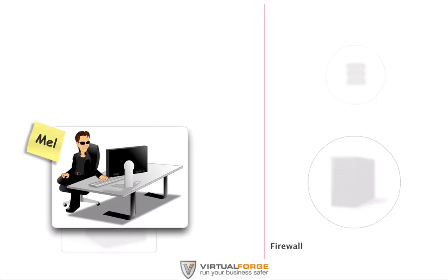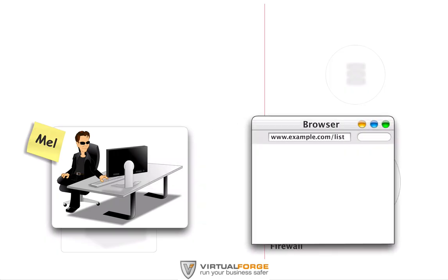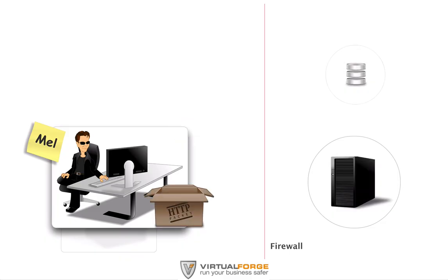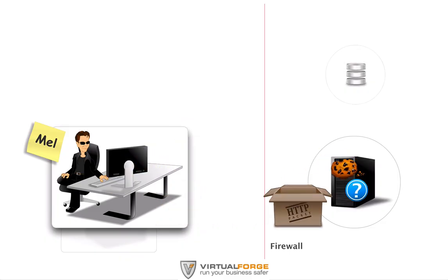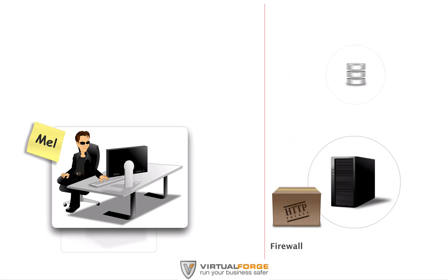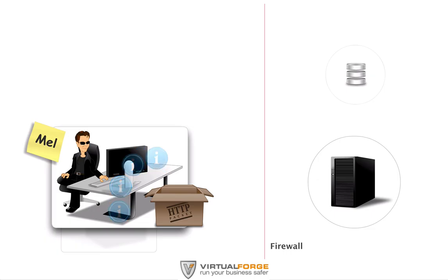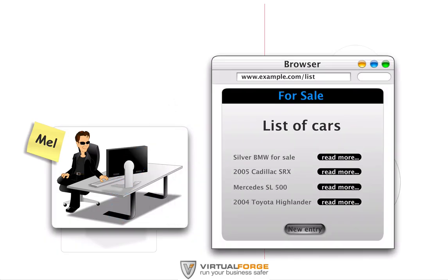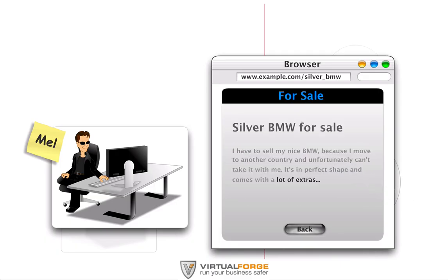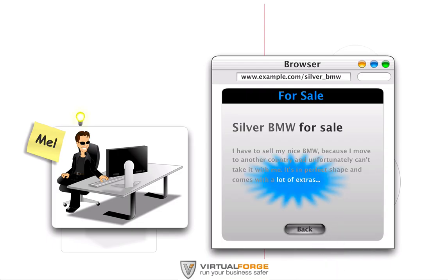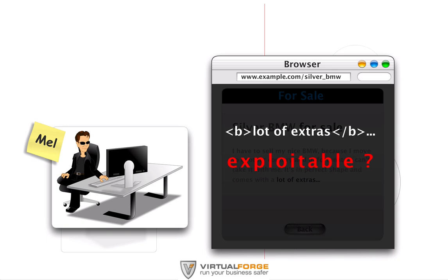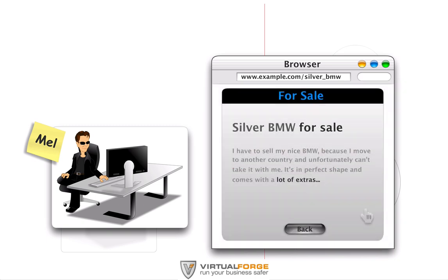Now we need to bring in another player, Mel. Mel is using his lunch break to see if he can hack into some systems and comes across our web server. All good hacking starts with analysis, so Mel first checks out how the application works. Basically, he does the same things Alice just did, and therefore receives the same information Alice just did. But he looks at the results a little differently — why is there some text written in bold letters? It seems that HTML tags are allowed input. Maybe any HTML tags.